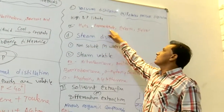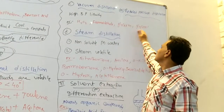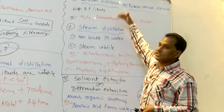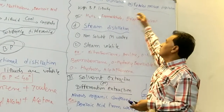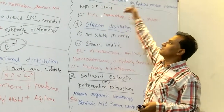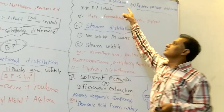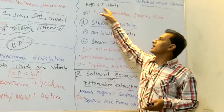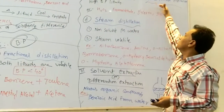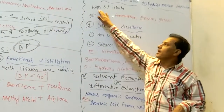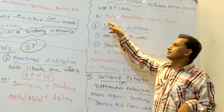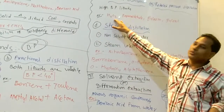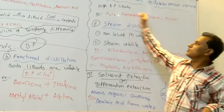Vacuum distillation, or reduced pressure distillation: H2O2, formaldehyde, and glycerin or glycerol have very high boiling points — sometimes thousands of degrees. So we reduce the boiling point by applying vacuum or reduced pressure. In vacuum distillation, the liquids that have a high boiling point are purified by decreasing the pressure, which lowers their boiling point. H2O2, formaldehyde, glycerin, and glycerol are purified by vacuum distillation.